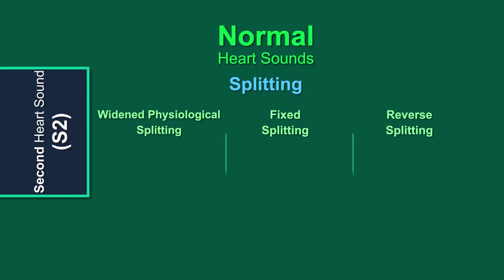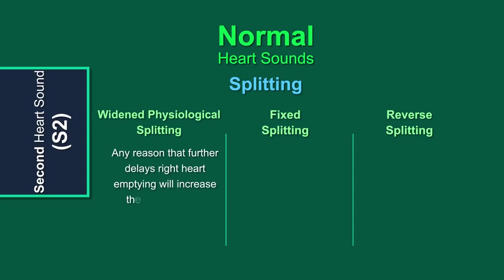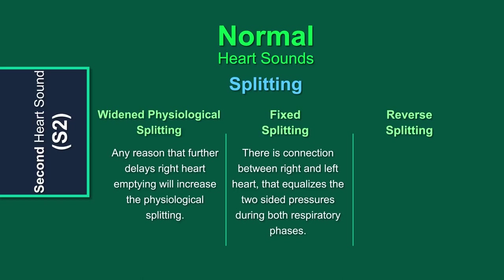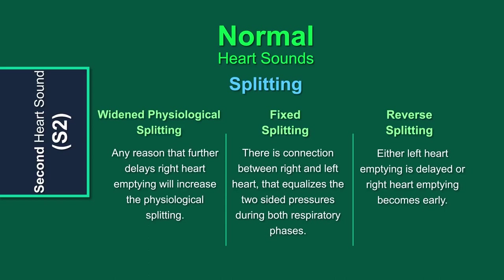We have already touched upon the widening of physiological splitting during inspiration, but any other reason that delays right ventricular emptying will also widen the physiological splitting of S2. Fixed splitting, as the name suggests, is not affected by respiratory phases — the split remains the same during both inspiration and expiration. This occurs when there is a connection between the right and left atria and pressure gets equalized during both phases of respiration. Reverse splitting is the increase in splitting during expiration, with closure of the gap during inspiration. This happens if either the left heart emptying is delayed or the right heart empties more quickly.